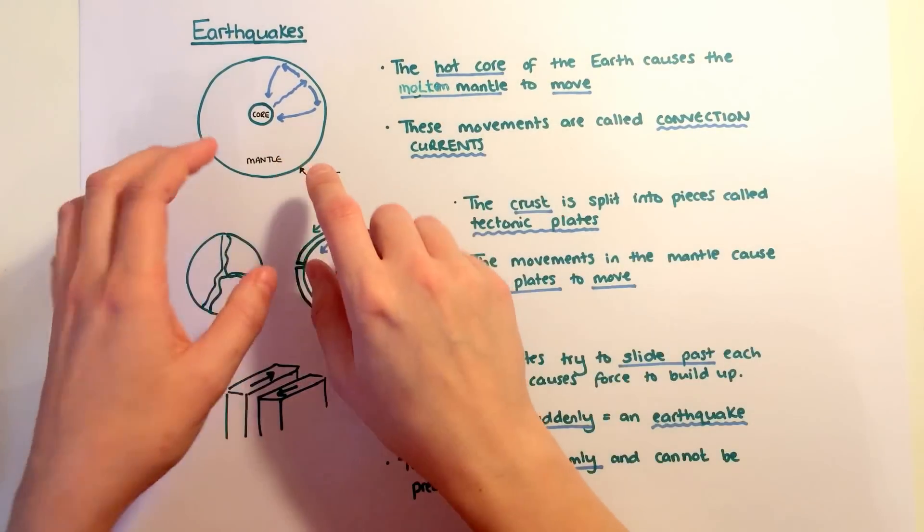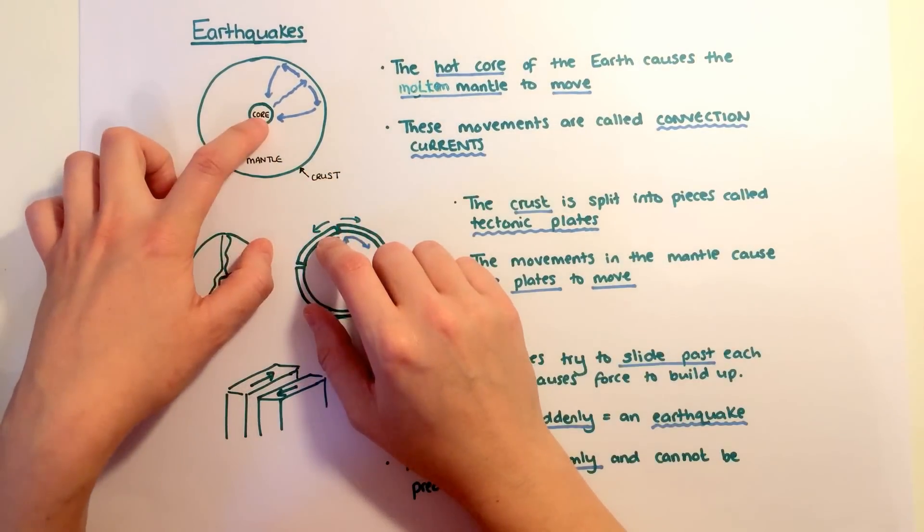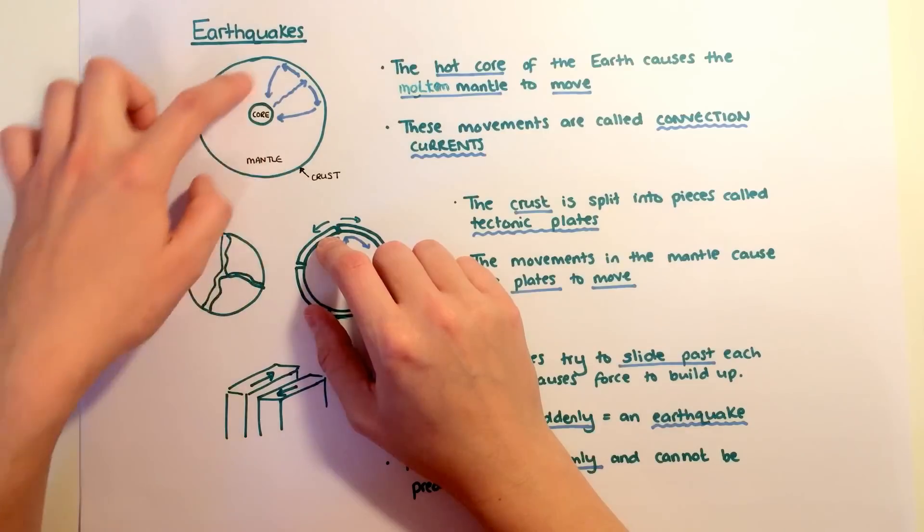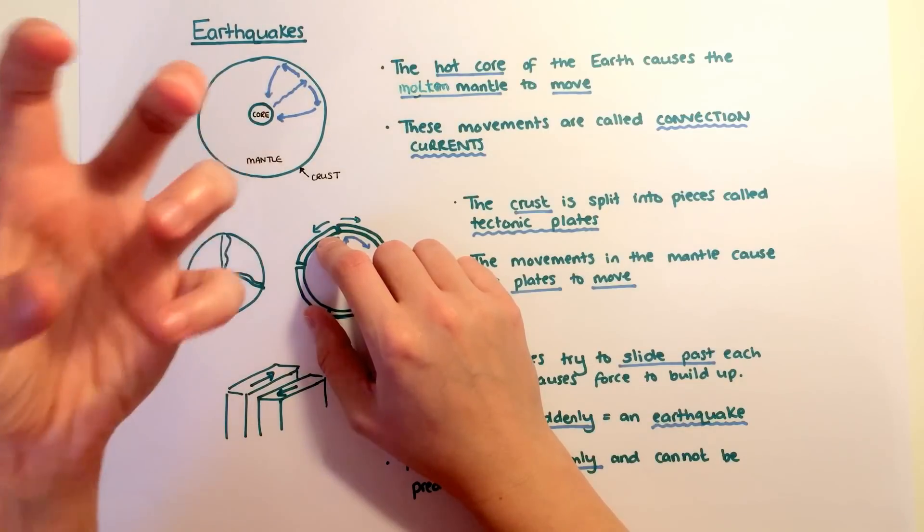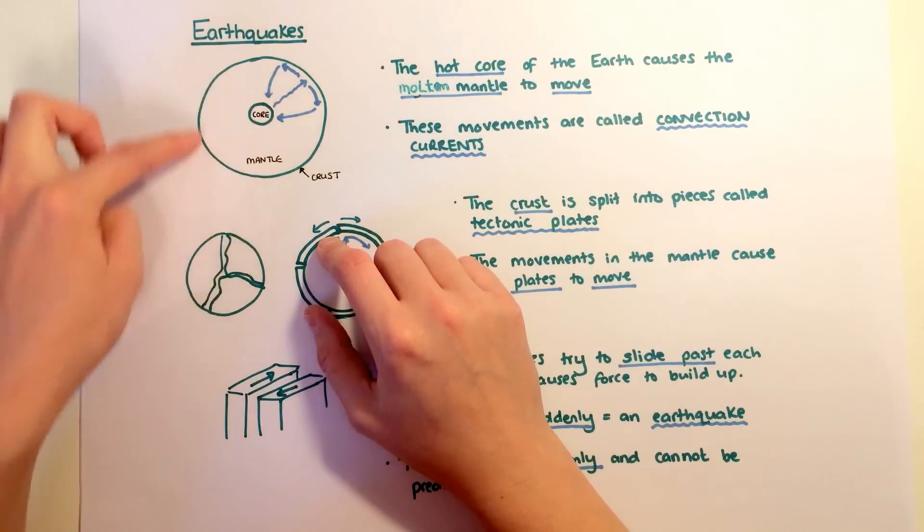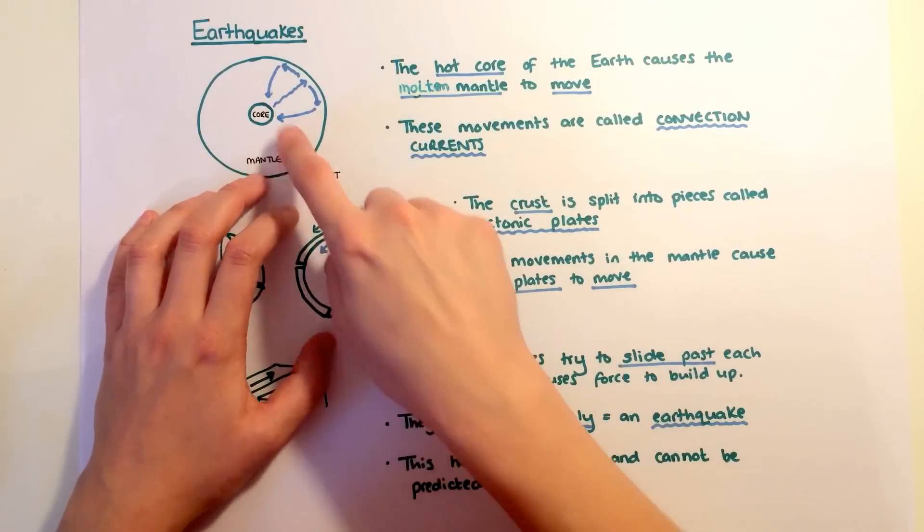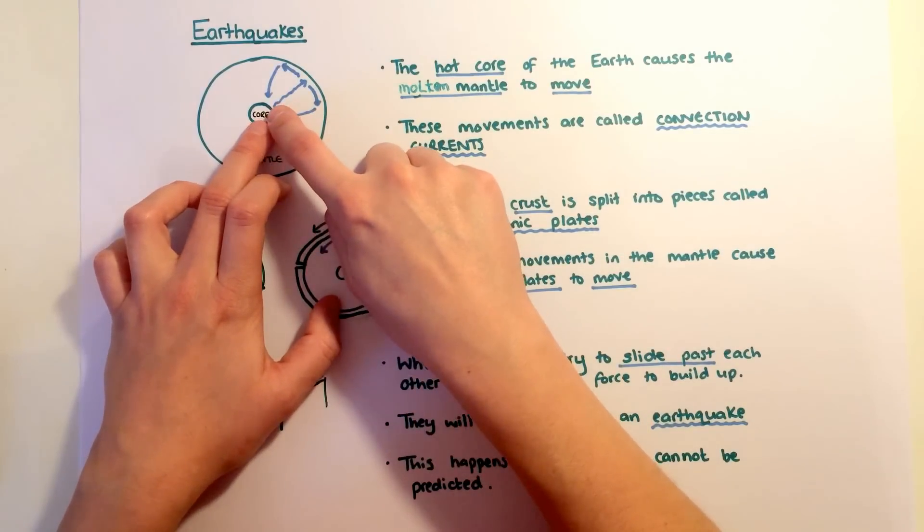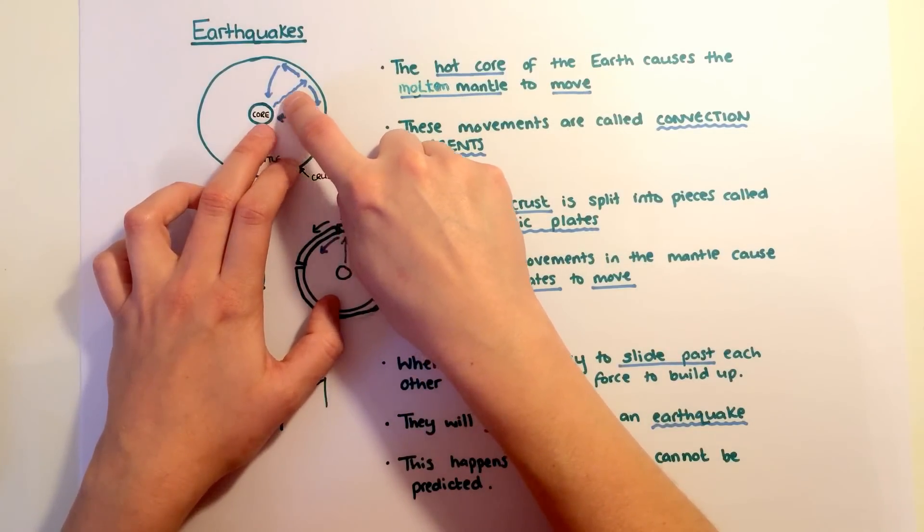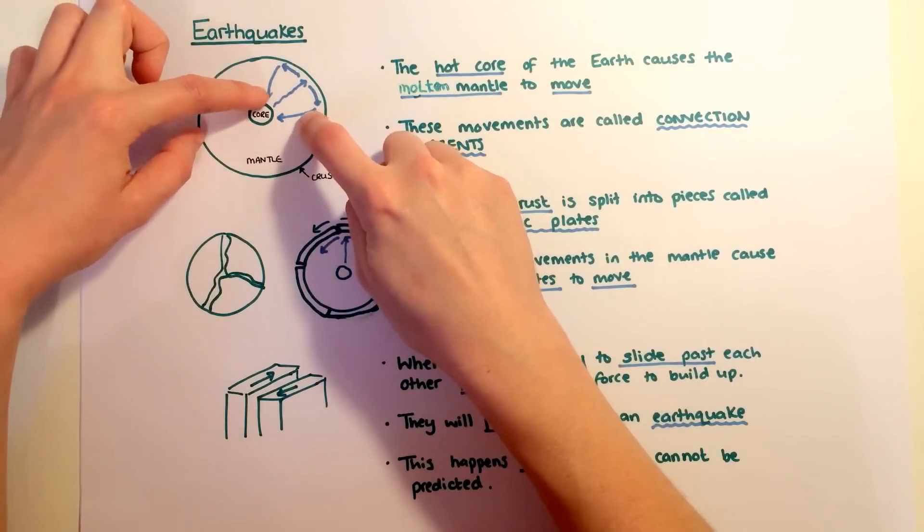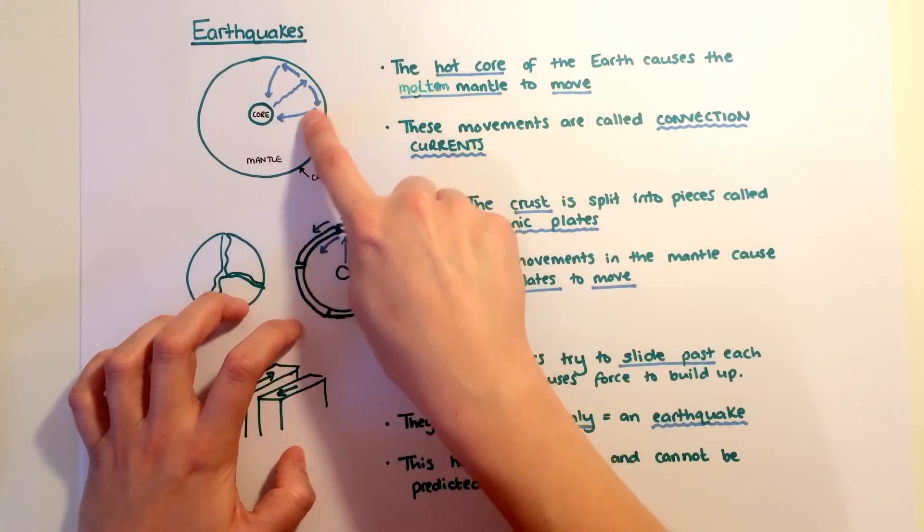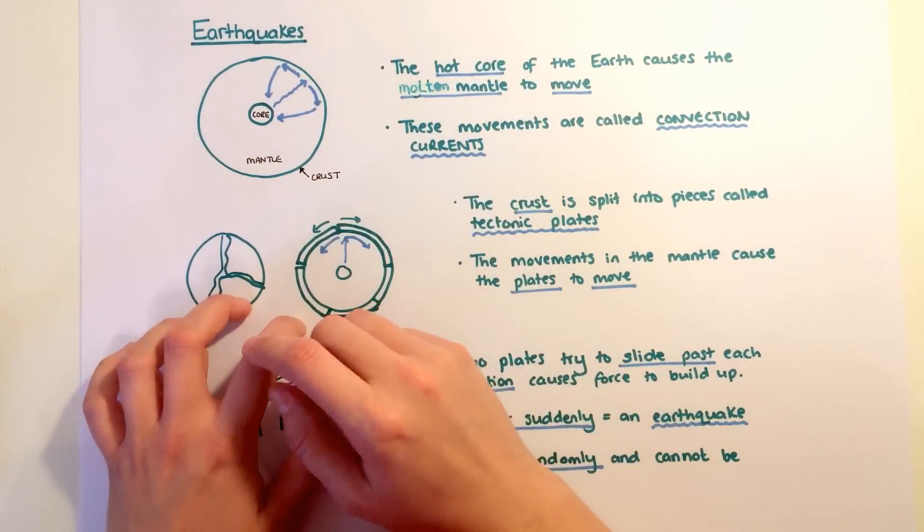Earthquakes. The earth is made up of a liquid hot core, a molten rock, a very thick almost solid rock mantle and an outer crust of solid rock. The core is very hot, which causes the mantle nearest to it to move away, and as it cools down it moves back down. These movements in the mantle are called convection currents.